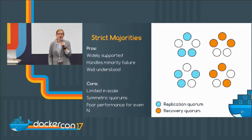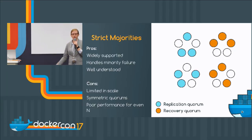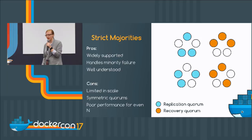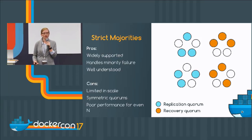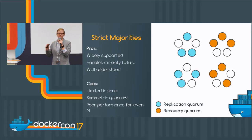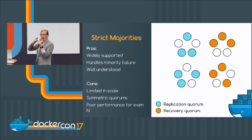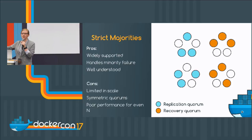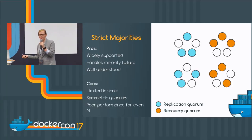And the problem is that it's symmetric — whether you're recovering from a failure or replicating something, you're doing the same amount of work. But the reality is that replication is really common. You do hundreds of thousands of requests replicated, and then you have a failure, recover, and then do loads of replication again. So replication is really common, recovery is rare, but we're treating them symmetrically.